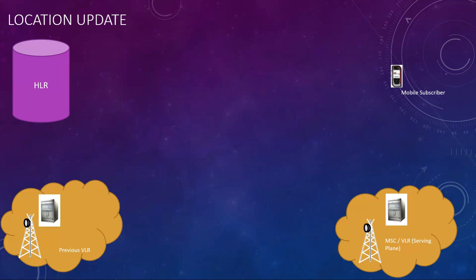Before we proceed, remember the old days when you used black and white phones like Nokia or Motorola, where you used to select the network manually. Once you switched on the mobile, you would see networks like Airtel, Idea, Vodafone, VSNL listed in your handset and you could select one. But with the introduction of smartphones, this is done automatically based on the preference of the network operator. The signal exchange happens via the air interface.